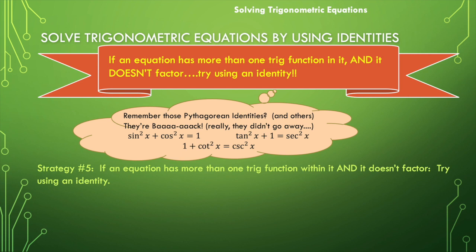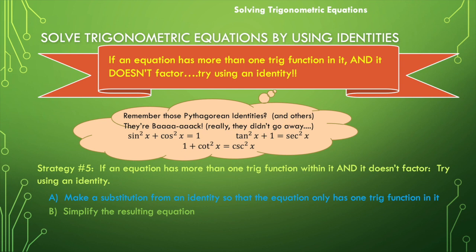Keep this in mind: if an equation has more than one trig function and it doesn't factor, try using an identity. Here are our steps. First, we're going to make a substitution from an identity so that the equation has only one trig function in it. Second, we'll simplify the resulting equation. Third, we'll use the previous strategies to isolate the trig function and solve for the variable.